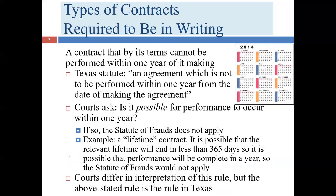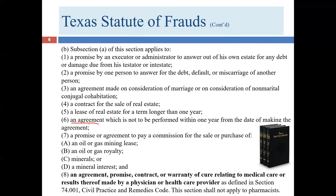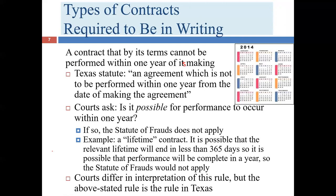The first category is: a contract that by its terms cannot be performed within one year of its making. The Texas statute language is: 'an agreement which is not to be performed within one year from the date of making the agreement.' The courts tend to want to find that the statute of frauds does not apply — their default assumption is that if there's a way to interpret a contract as not requiring the statute, that will be their preference.